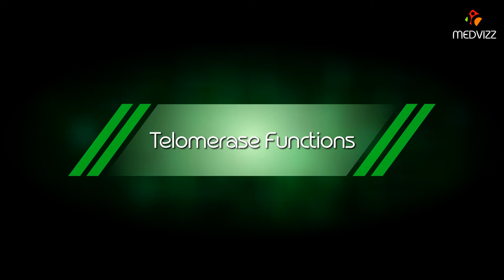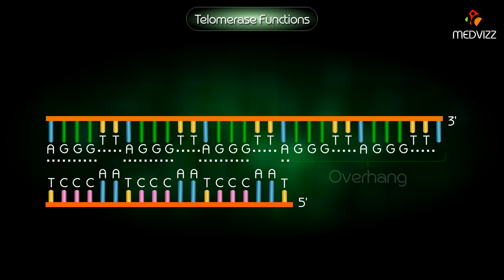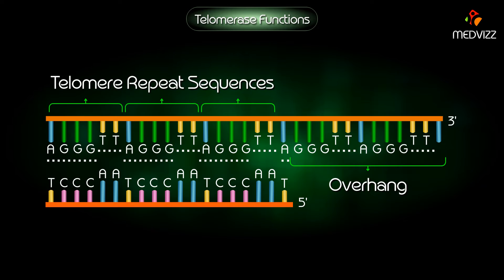The ends of chromosomes contain regions referred to as telomeres. These telomeric regions consist of telomeric repeat sequences. The exact sequence of telomeric repeats can vary from species to species. The repeat sequence shown here is found on telomeres of human chromosomes.